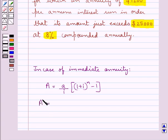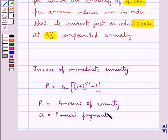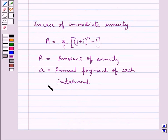Here, this capital A is the amount of annuity. Small a is the annual payment of each installment. Then N is the number of periods of the annuity.